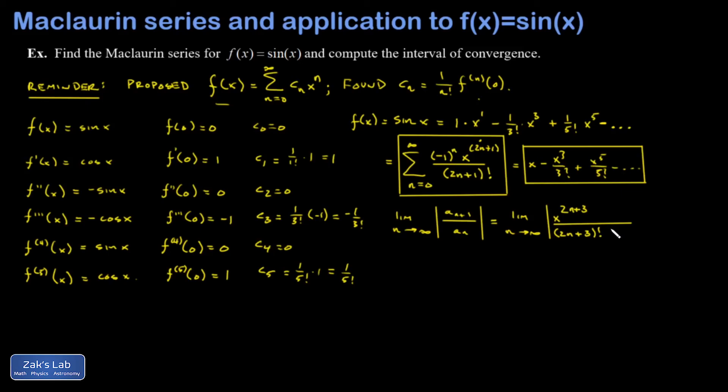And then I divide by the nth term, which is the same as multiplying by its reciprocal. So in the next line, I'm going to split some things apart to prepare for cancellations. I'm going to pull an x squared out of that first term. So I can cancel it with the 2n plus 1 in the denominator. And I'm going to split off the first couple terms in this factorial in the denominator and write it as 2n plus 3 times 2n plus 2 times 2n plus 1 factorial.